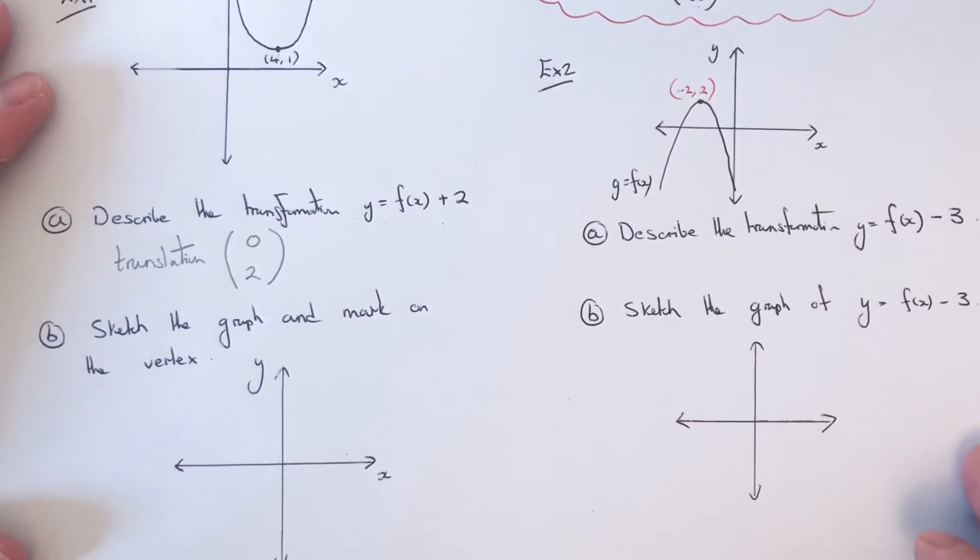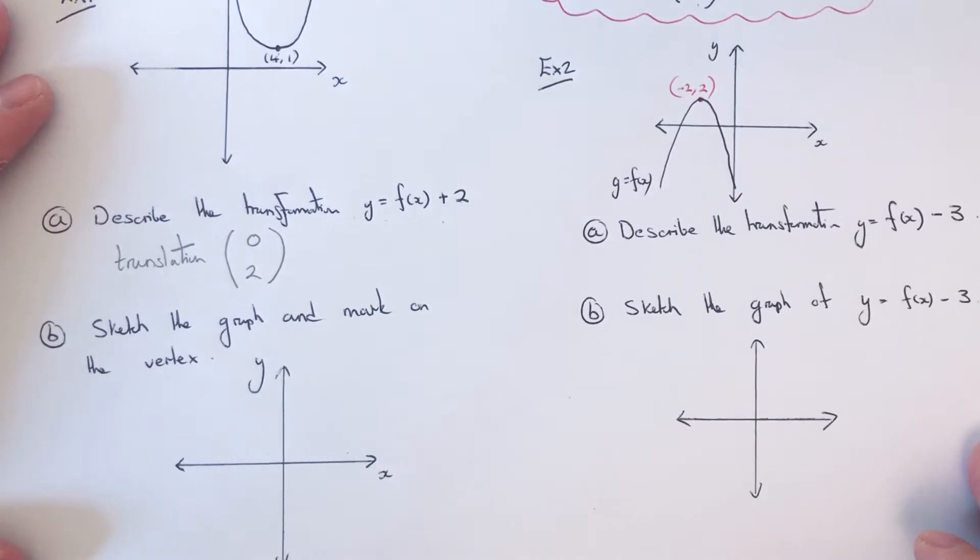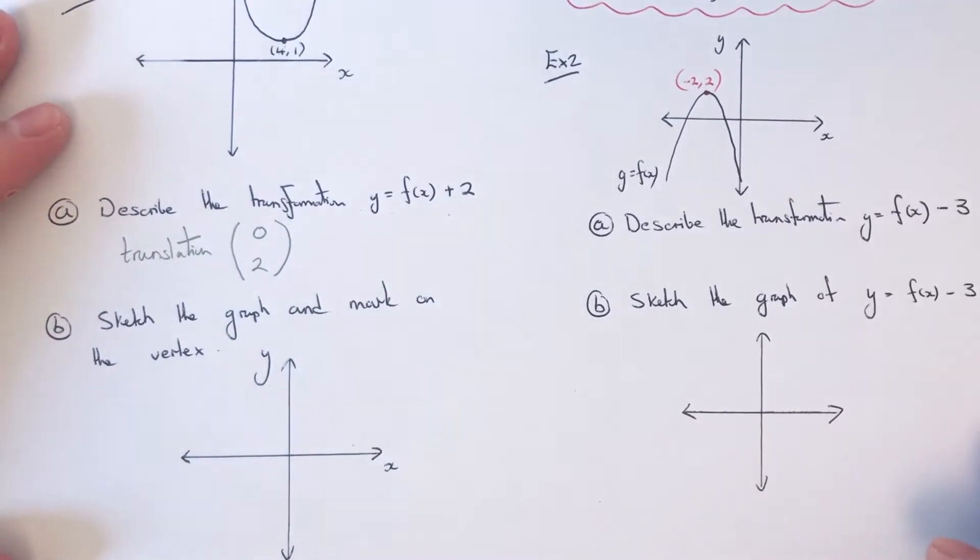For part b then we've got to sketch the graph and mark on the vertex. That's the graph y equals f of x plus 2.